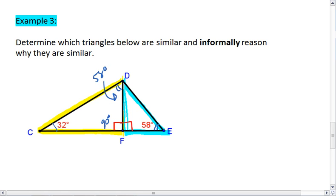Well, look at that. DEF also has 58 degrees. And just to double check, we could reason through and say that the third angle of DEF is 32 degrees, meaning triangle CDF must be similar.